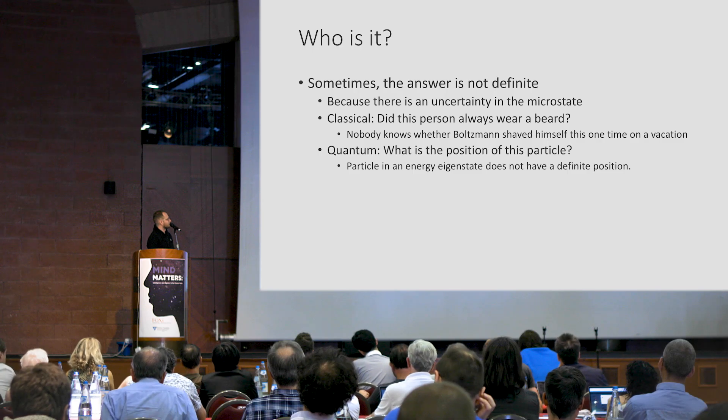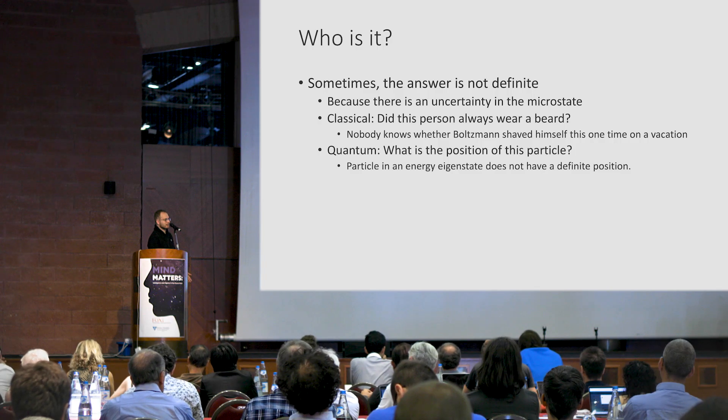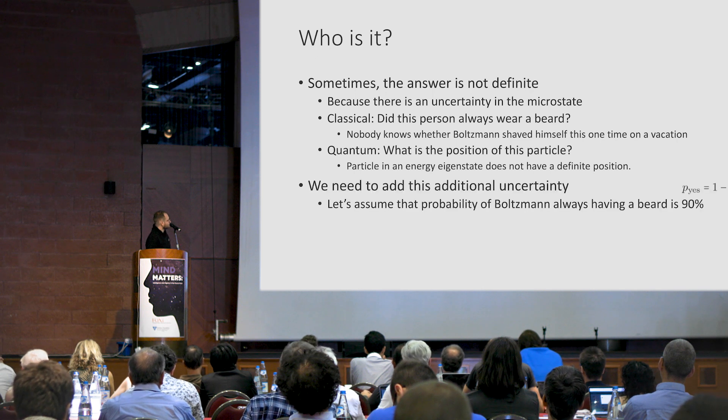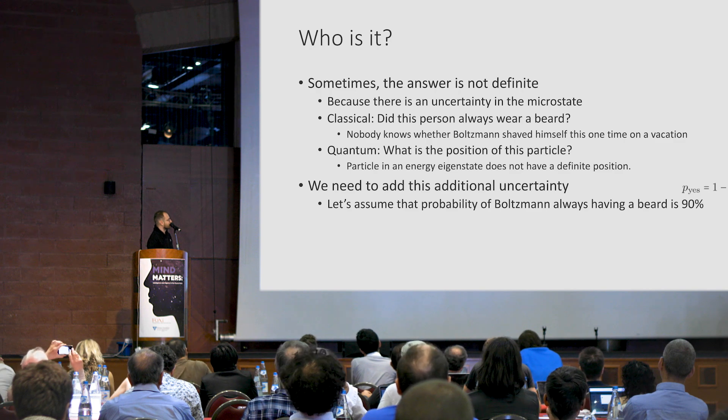So, on the example of this classical uncertainty would be like, has Boltzmann ever worn very bad? And maybe, I don't know, maybe he didn't, maybe he should this one time, I just don't know. But on a more fundamental level, an electron, I guess, doesn't have a definite position. So there's this uncertainty that is still there.